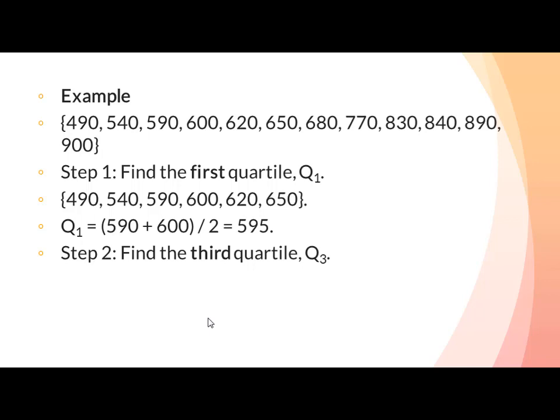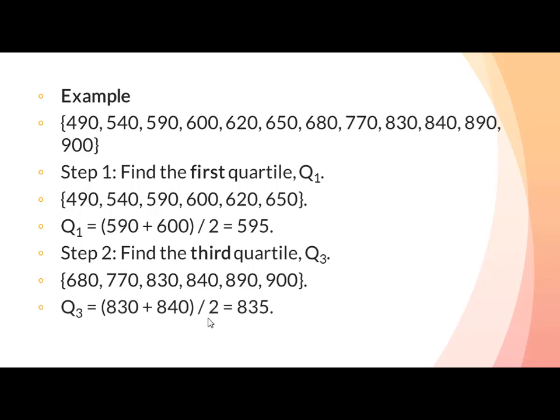Step 2: find the third quartile Q3. Last six values — 680, 770, 830, 840, 890 اور 900 — یہ third quartile ہیں۔ ان کا median معلوم کرنے کے لیے دو central values 830 اور 840 لیتے ہیں۔ 830 + 840 = 1670, divided by 2 = 835 — یہ third quartile کا median ہے۔